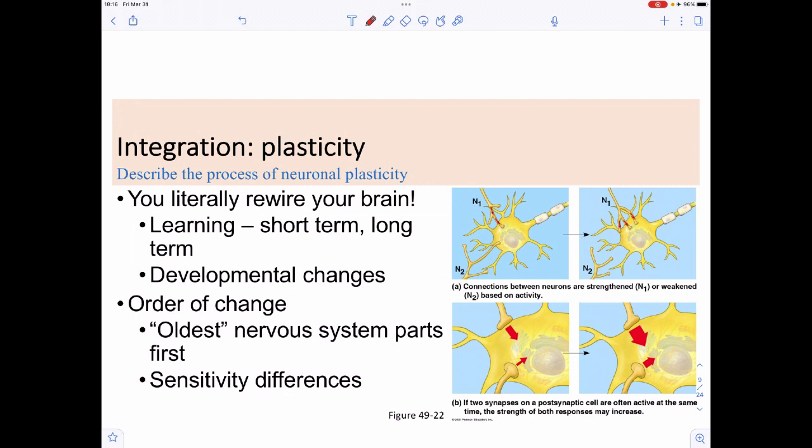With these synapses between these neurons, it turns out that we like to think, oh well, it's a wiring problem and the wiring just stays put. That's actually not true. The wiring has a degree of what we call plasticity, that is it can change on you, which is a literal rewiring of your brain. Whenever you have learning, whether that's short-term or long-term, it is an alteration of the wiring of your brain.